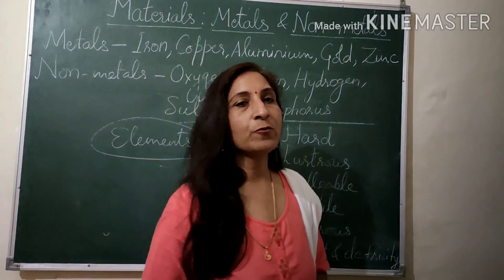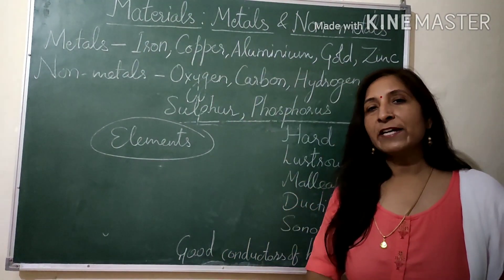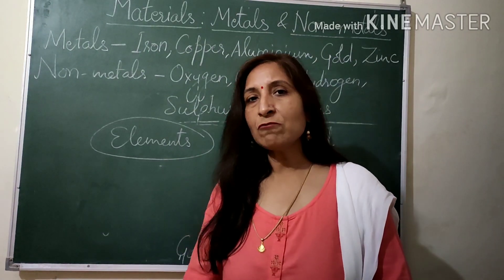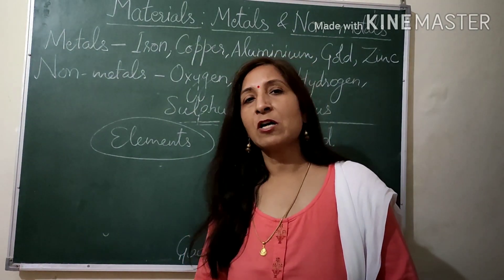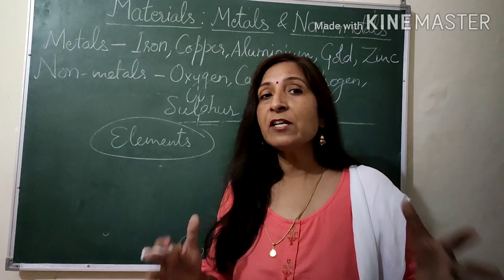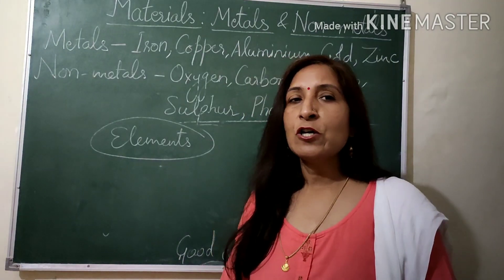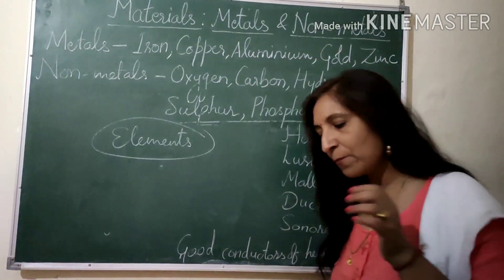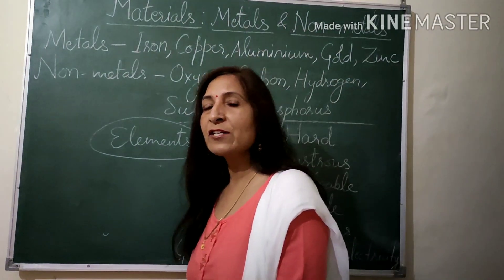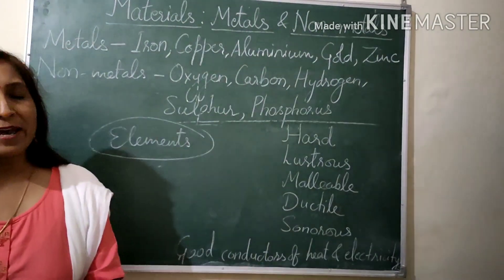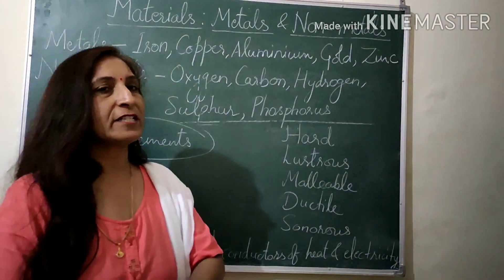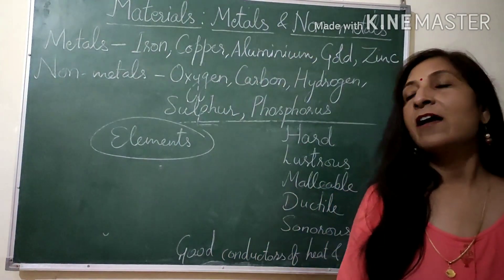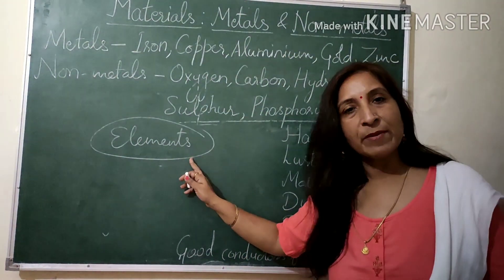Suppose I ask you to list some of the things present around you. Your list can include hundreds of things, thousands of things, and even millions of things. There is so much variety present around you. But you will be surprised to know that all these things are actually made up of a few basic substances, less than a hundred in number, which we call elements.